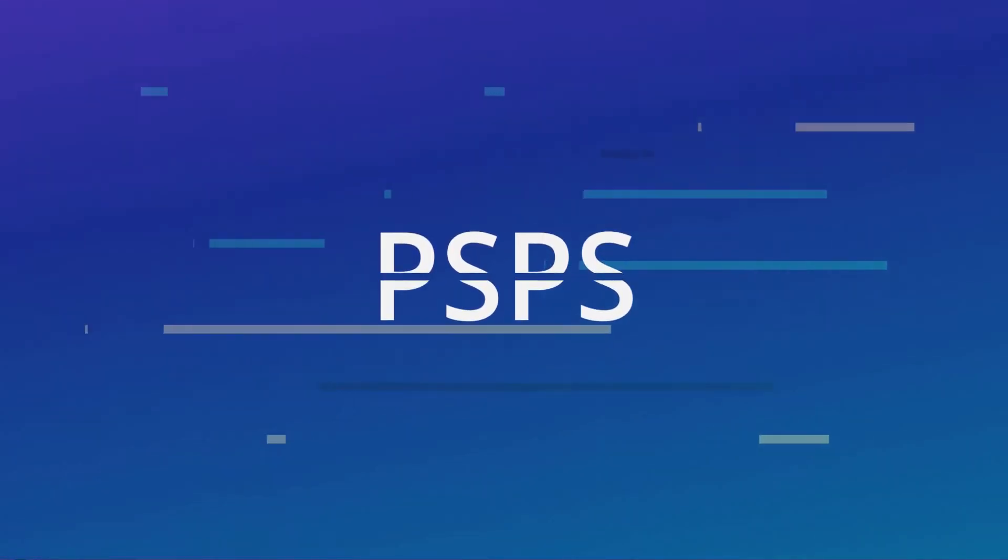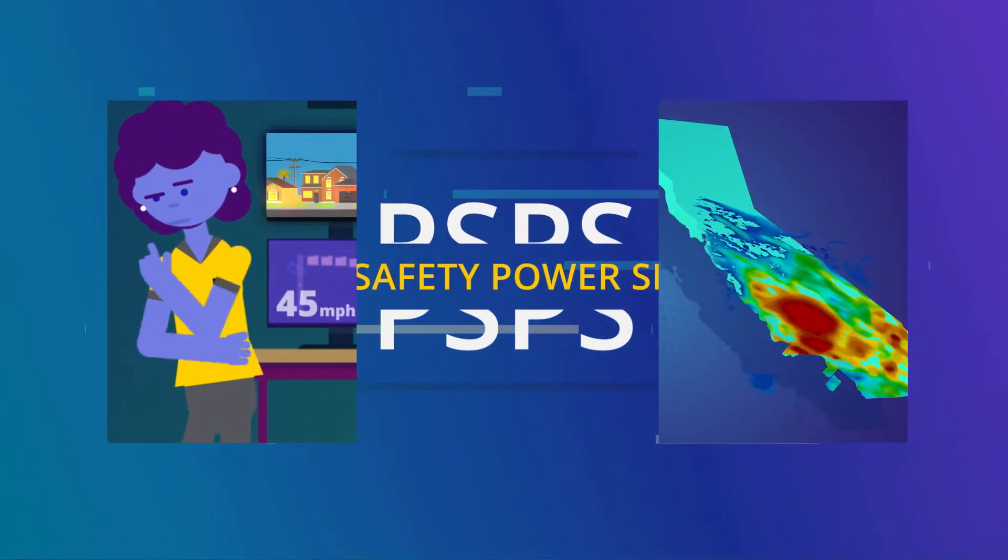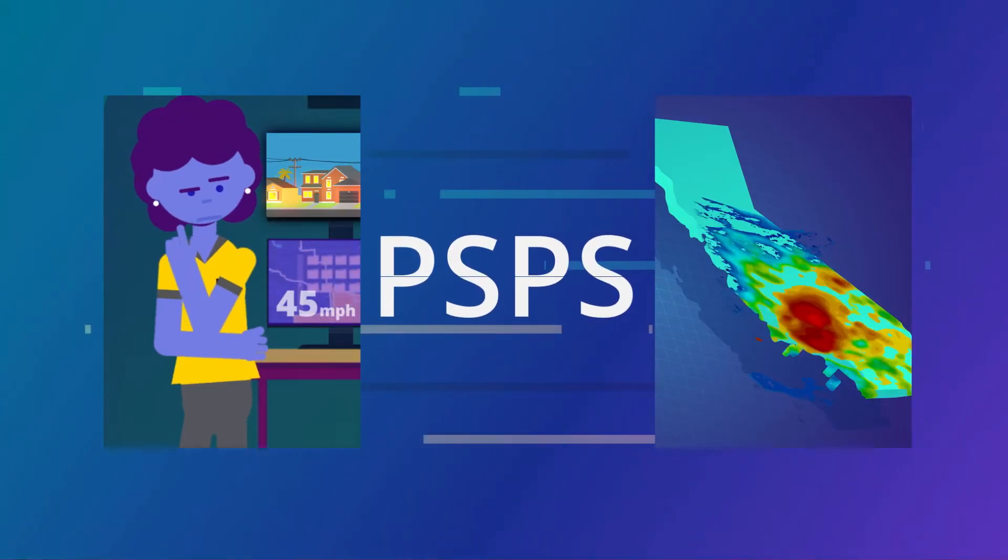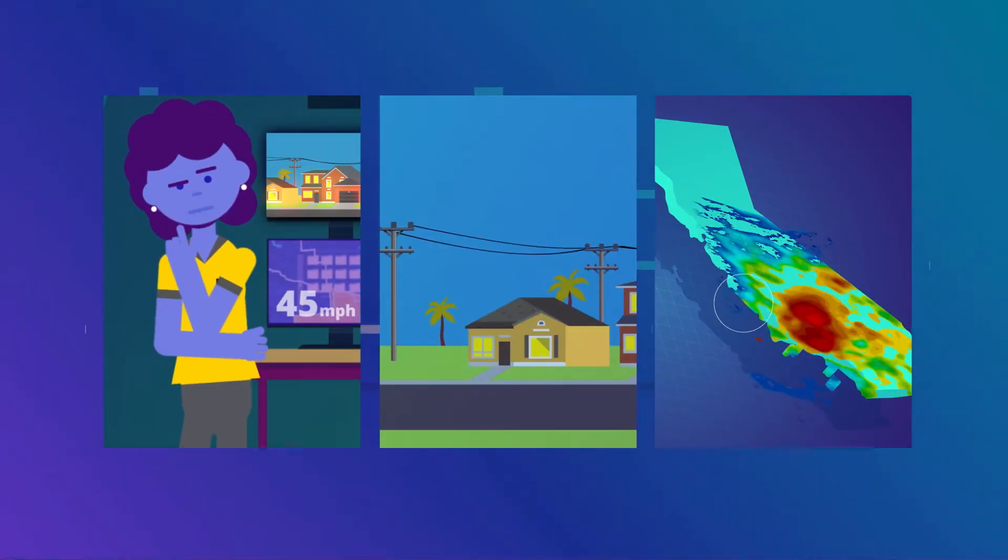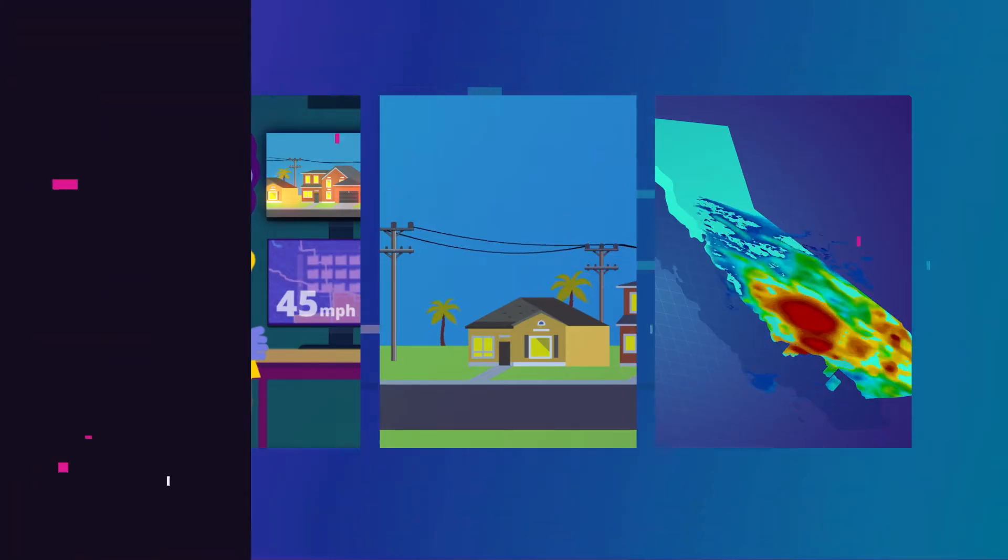Public safety power shutoffs are our tool of last resort. Our meteorologists map the weather. As with a hurricane, this information will get more exact as we get closer to the event.